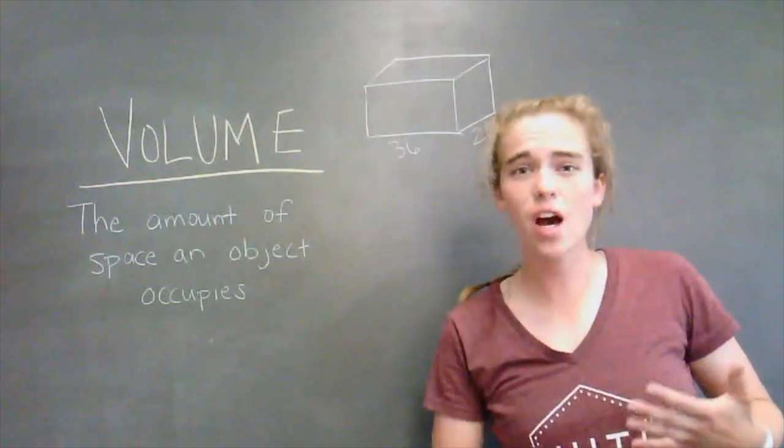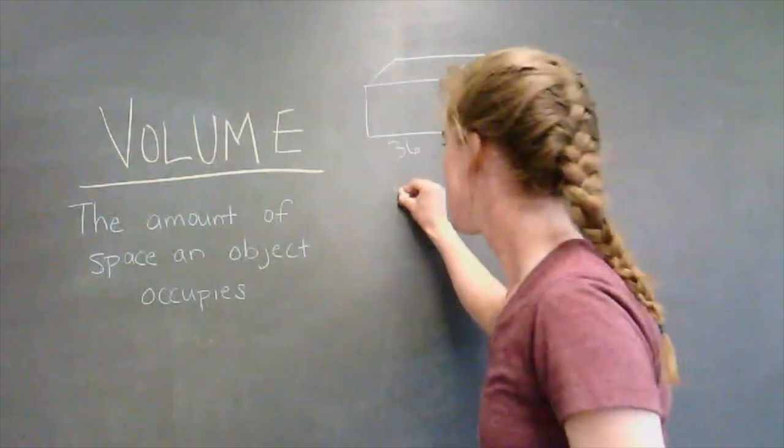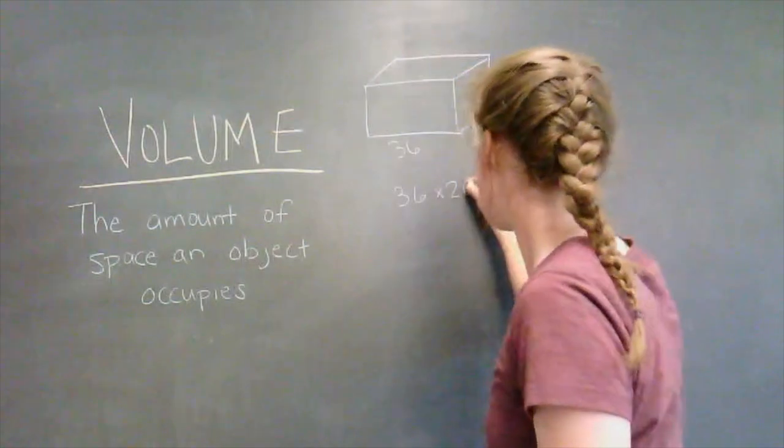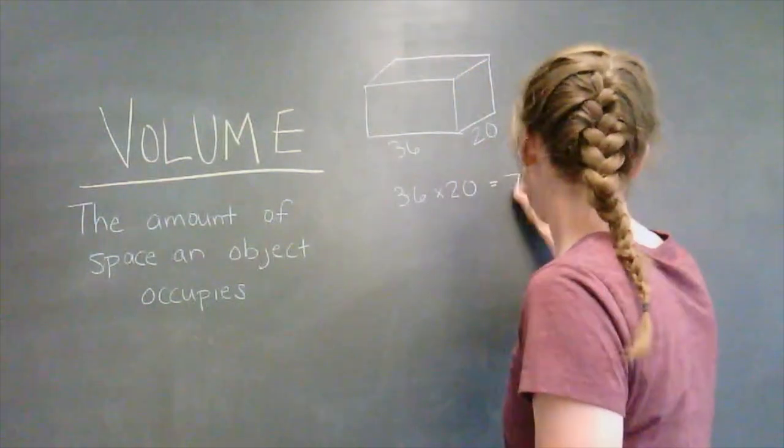So if we were going to find the area of the base of this, that would be 36 times 20, which ends up equaling 720.